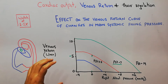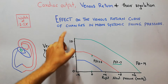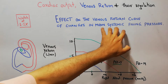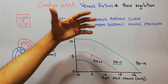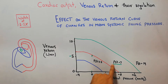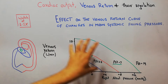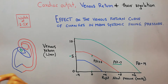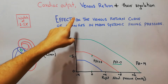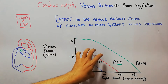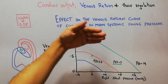Today in this lecture we are going to discuss the effect on the venous return curve of changes in mean systemic filling pressure. What will be the effect of changes in mean systemic filling pressure on the venous return curve? Here we have the different venous return curves, and we are changing the mean systemic filling pressure and looking at the effect on the venous return curve.